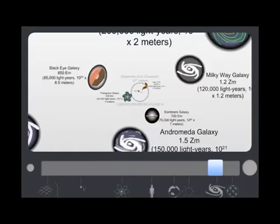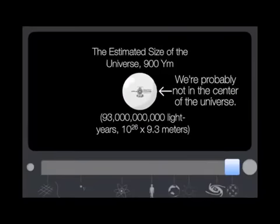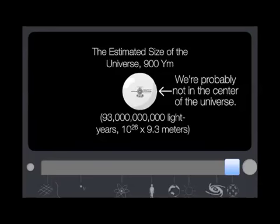Now we've backed up so far that we're looking at different galaxies — the Milky Way, Andromeda, and the Black Eye galaxy. We are so far back that we're just looking at galaxies. And here it is: the estimated size of the universe. We don't know for certain, but we're talking about 93 billion light years in size. Which makes me think we are probably not in the center of the universe.